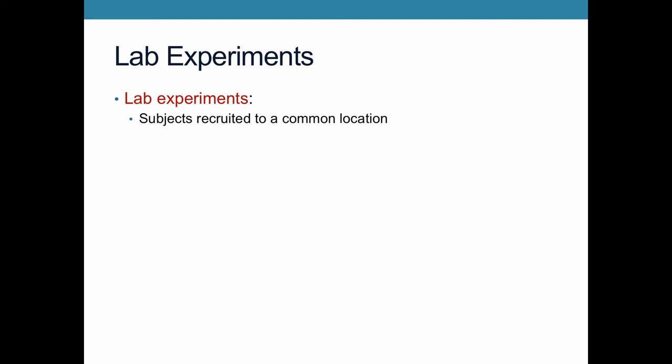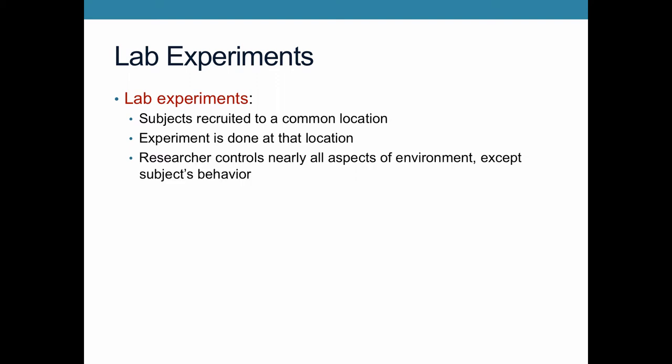Typically subjects are college students and the common location will be an office for some political science professor, so they'll have a site where they can do these experiments. They're not necessarily a location that you might imagine having an experiment in — they're not a chemistry lab. The lab just really means that the location is a site that the researchers are in charge of, and the experiment is done at that location.